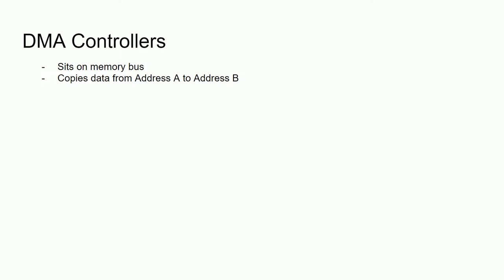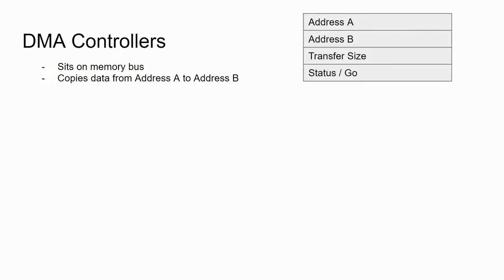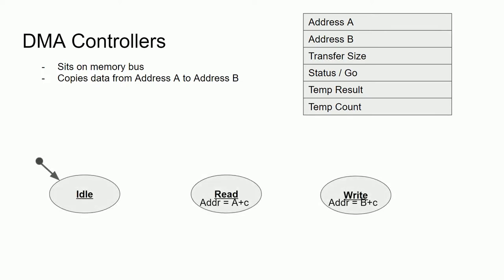How would we implement this? To start off with, let's define a few input registers: address A, address B, the transfer size, and a status register. The status register would contain things like if the DMA controller is busy — i.e., currently copying data — and can also represent the go command, usually done via writing a one to the status register. The DMA controller has some internal memory to temporarily store the result, since system buses typically require components to either source or sink data and not direct the flow of it. We would also need a temporary count register to hold how many words have currently been transferred.